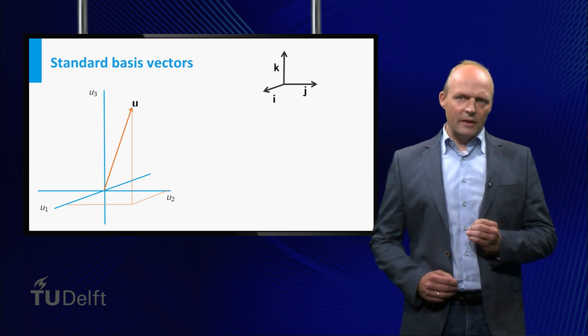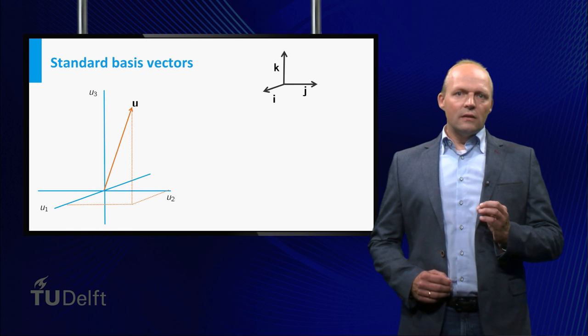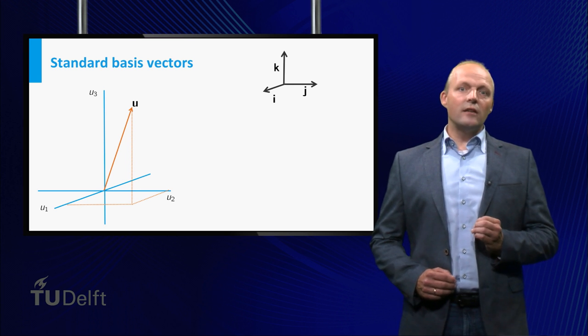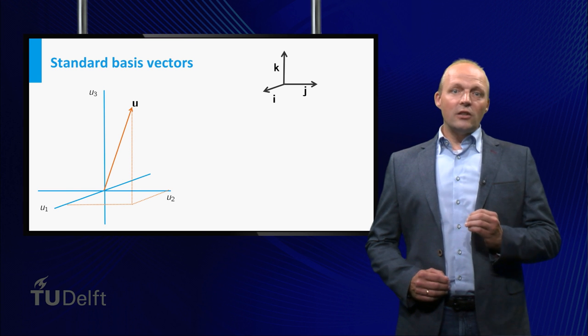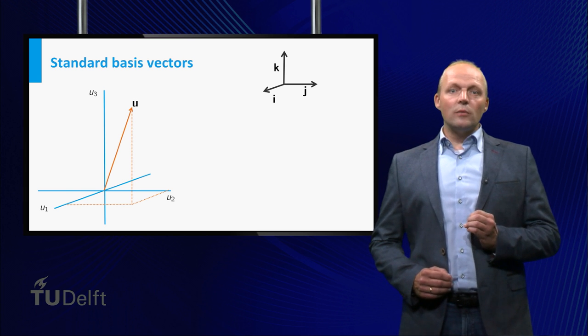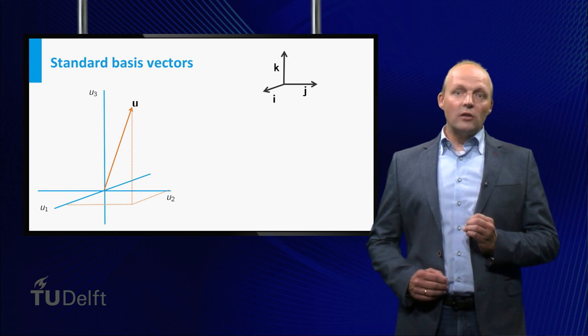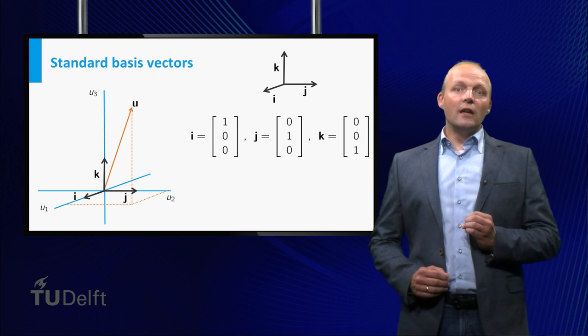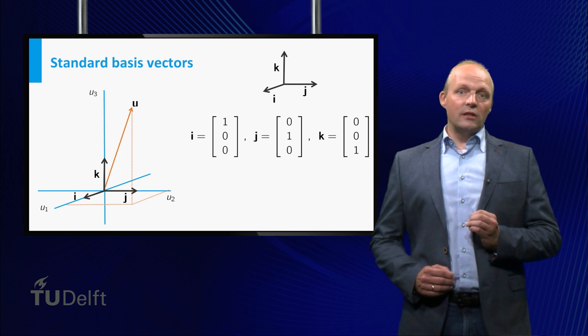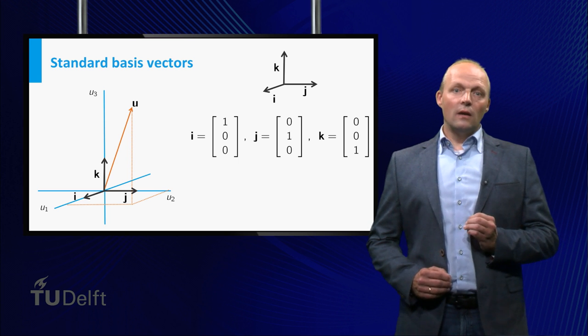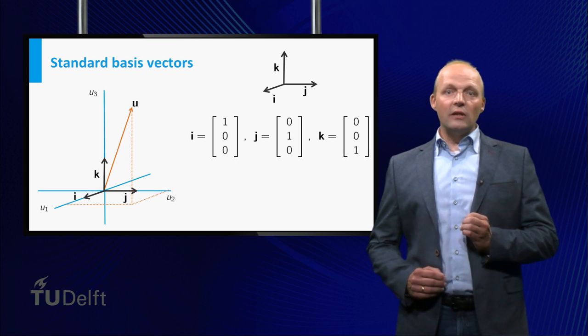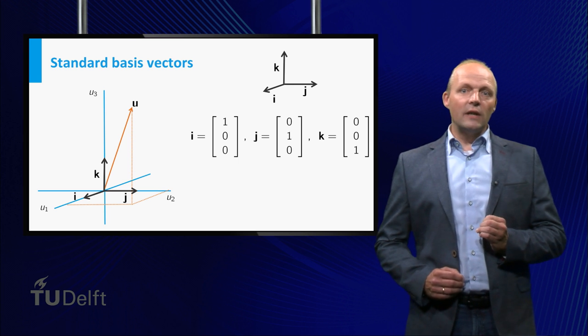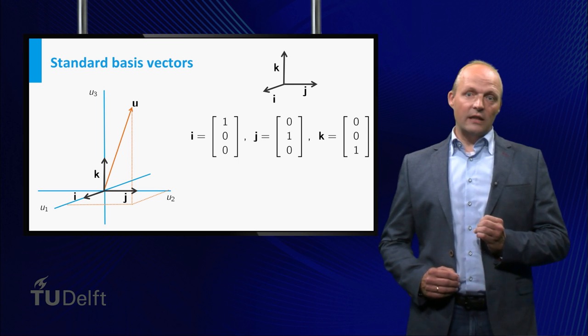Among all unit vectors in three-dimensional space, there are three special vectors, the standard basis vectors. These are the vectors having all but one component equal to zero and one component equal to one. i, j and k constitute a so-called basis of three-dimensional space. Every vector in this space can be written uniquely as a linear combination of these three basis vectors.